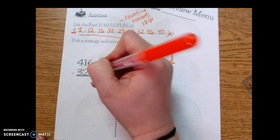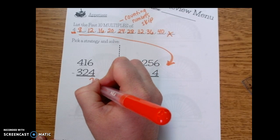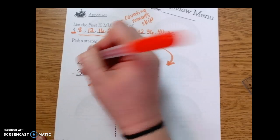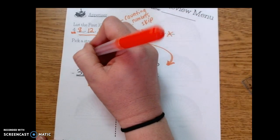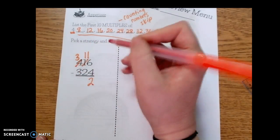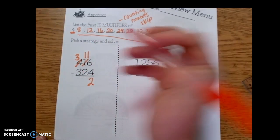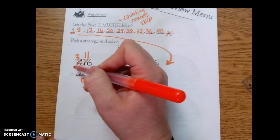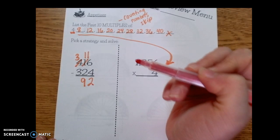So first we're going to do 6 minus 4 which is 2. 1 minus 2, can't do. The 1 becomes an 11. Cross out the 4, make it a 3. Now 11 minus 2 is 9, and 3 minus 3 is 0. So our answer is 92.